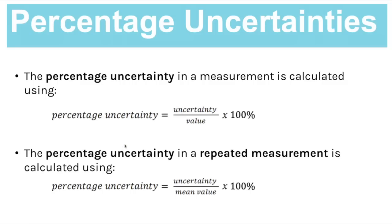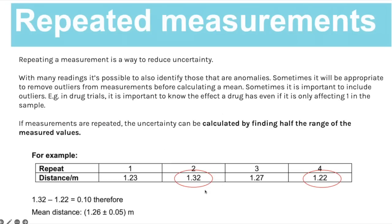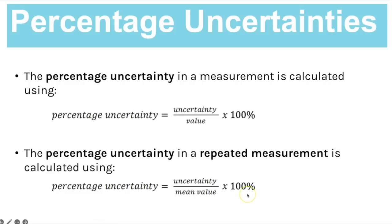Percentage uncertainty is probably more commonly examined. The percentage uncertainty in a measurement is calculated using this formula: uncertainty divided by the value (whether that's your reading or measurement), multiplied by 100 because it's a percentage. If you want the percentage uncertainty in a repeated measurement, it's the uncertainty divided by the mean value, times 100.